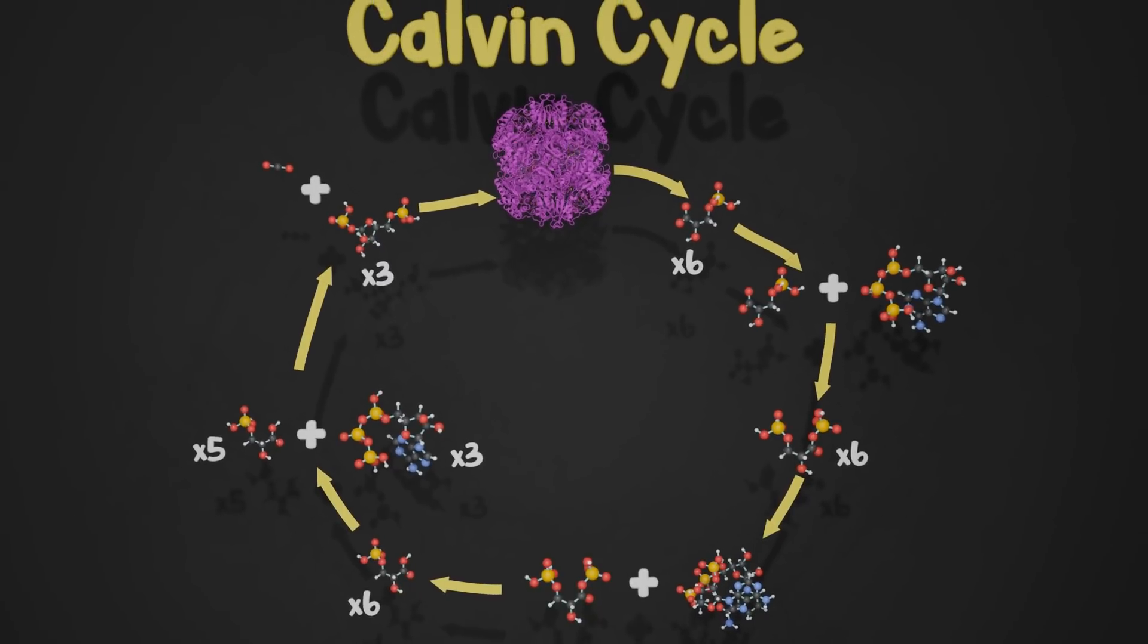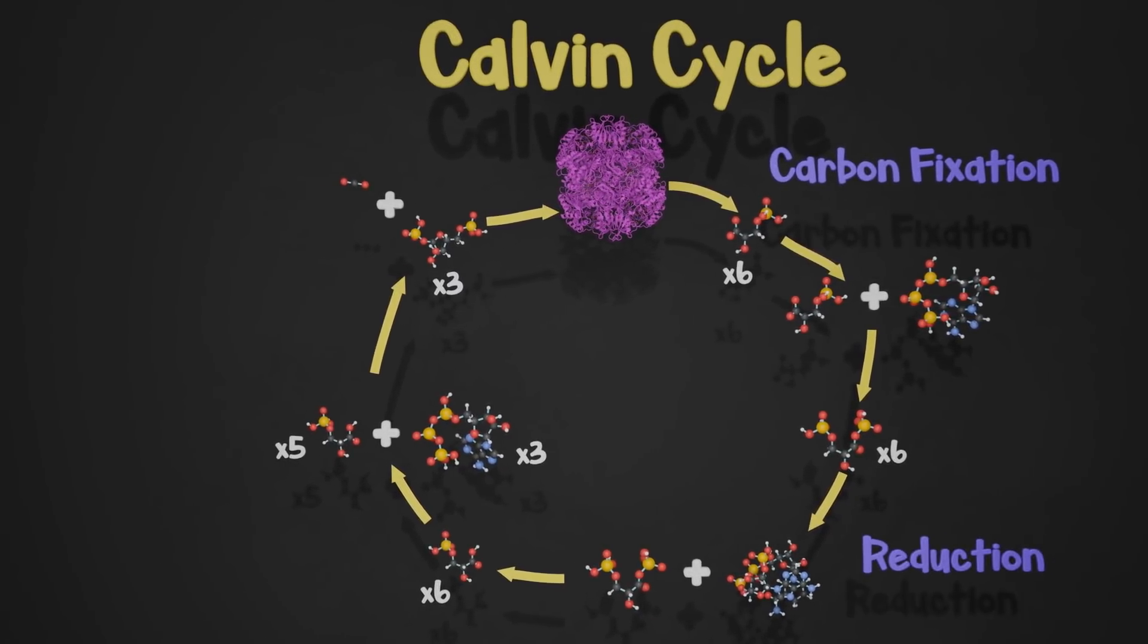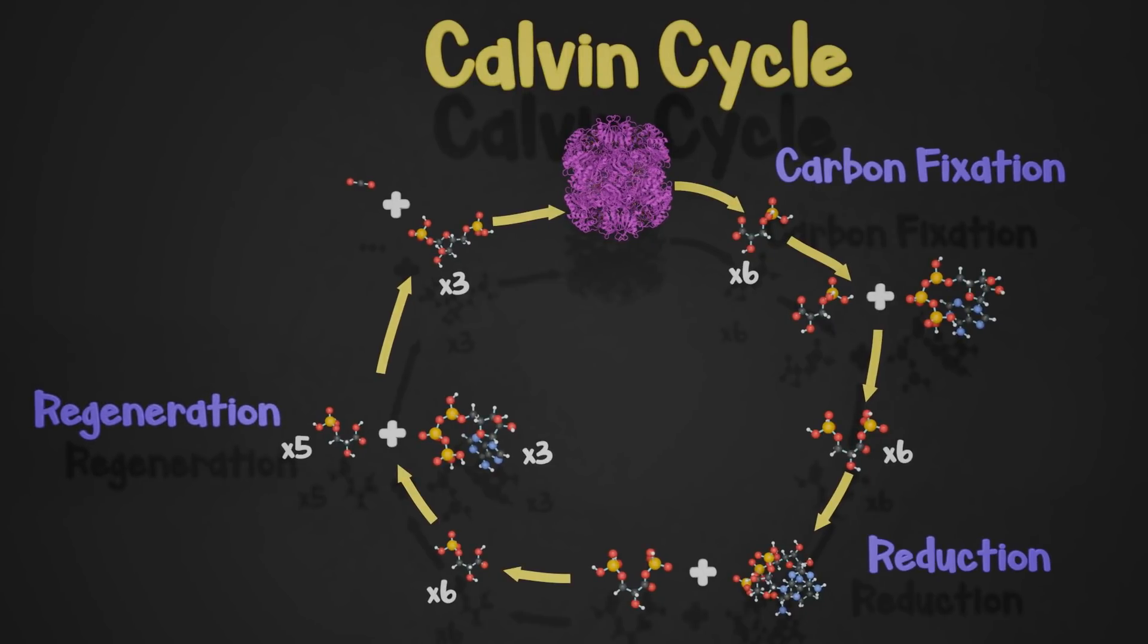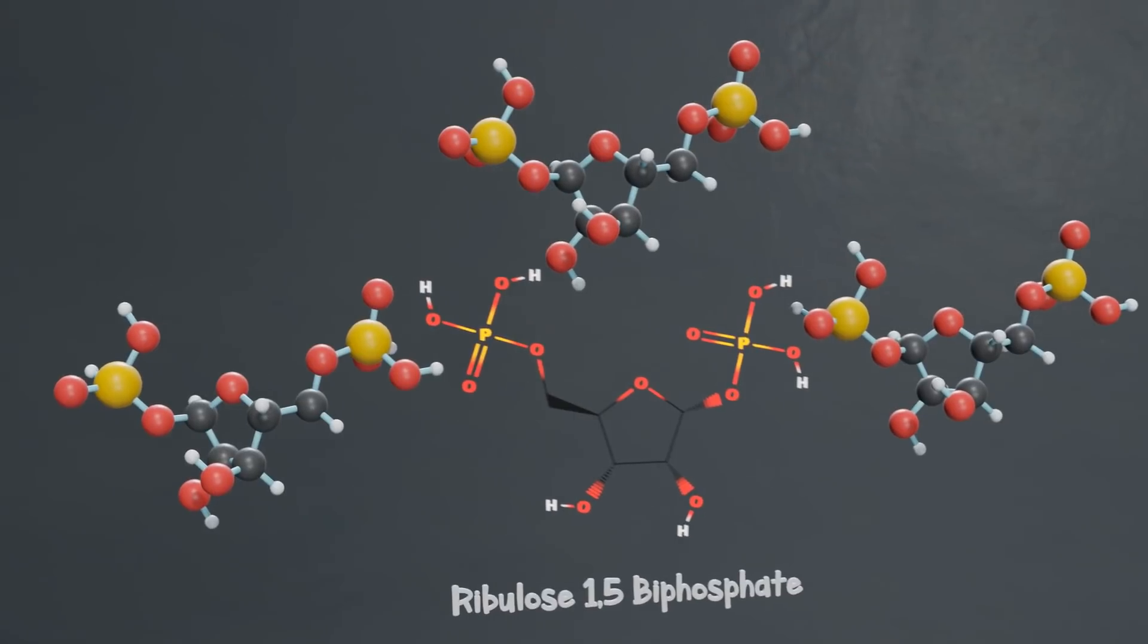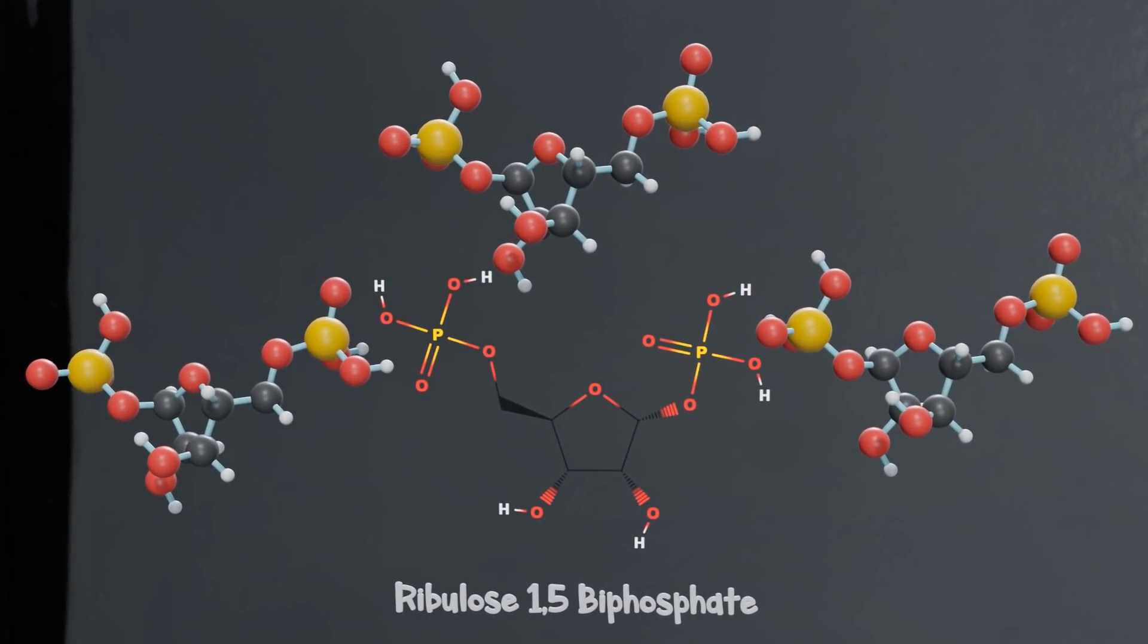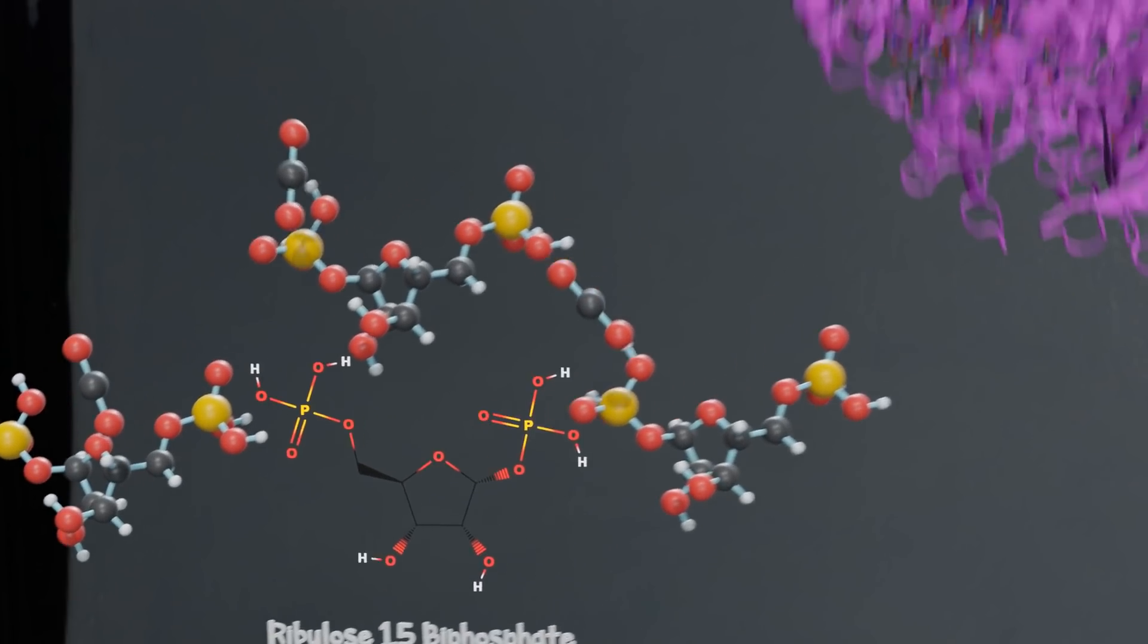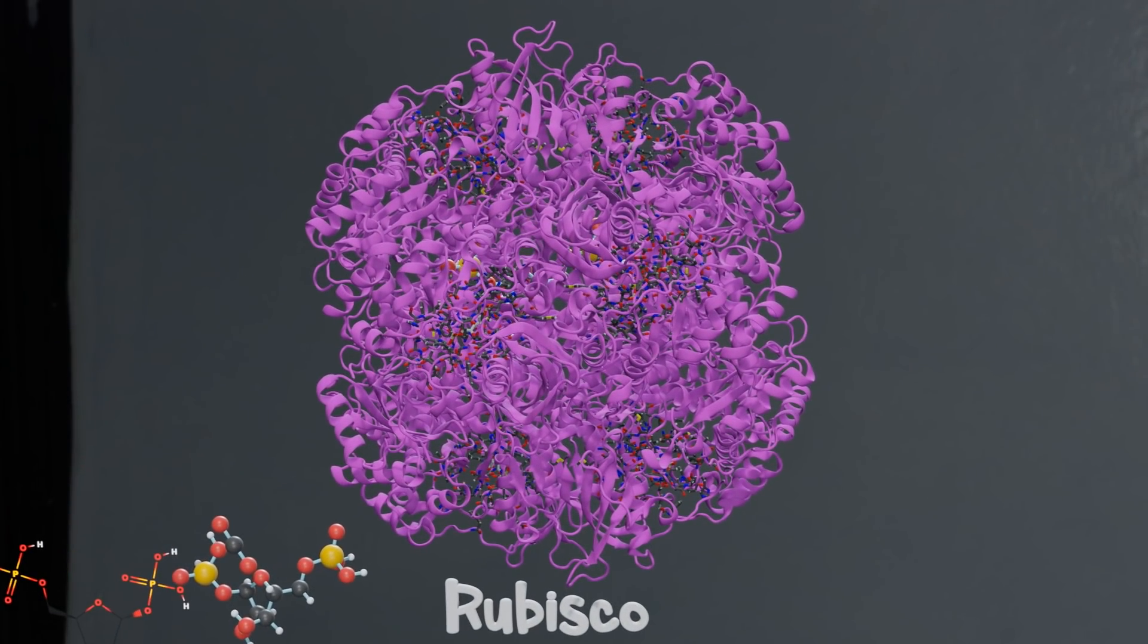The Calvin cycle is broken into three steps: fixation, reduction, and acceptor regeneration. To begin, we have three molecules of ribulose biphosphate. These are independent of our light reactions. Three carbon dioxide molecules enter and are enzymatically bound by the infamous rubisco protein to each ribulose molecule. This creates an unstable intermediary, which immediately collapses, forming molecules of phosphoglycerate.